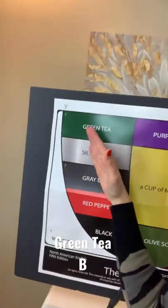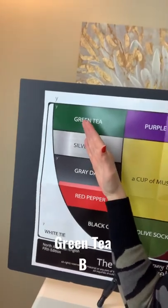B. It's the B consonant and the green tree E vowel sound. Green tree B.